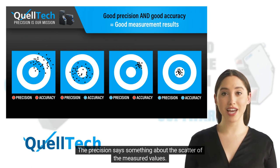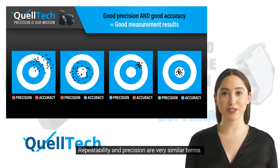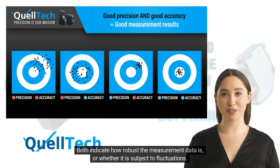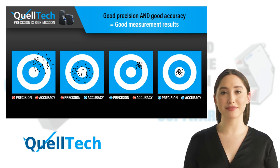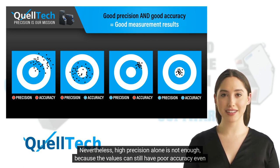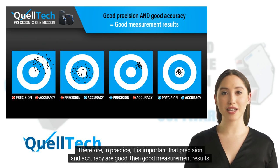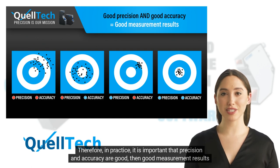The precision describes the scatter of the measured values. If the measured values are very close to each other, this is called high precision. Repeatability and precision are very similar terms — both indicate how robust the measurement data is, or whether it is subject to fluctuations. Since laser line triangulators usually have no moving parts, high repeatability of the sensor can be expected. Nevertheless, high precision alone is not enough, because the values can still have poor accuracy even though they are close together. Therefore, in practice, it is important that both precision and accuracy are good in order to achieve good measurement results.